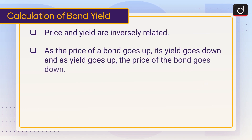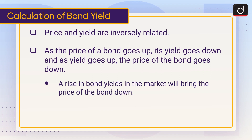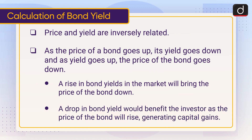As the price of a bond goes up, its yield goes down, and as yield goes up, the price of the bond goes down. A rise in bond yields in the market will bring the price of the bond down, and a drop in bond yield would benefit the investor as the price of the bond will rise, generating capital gains.